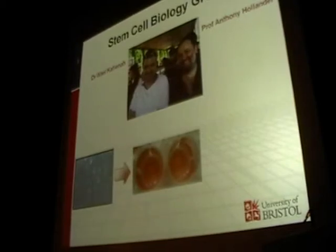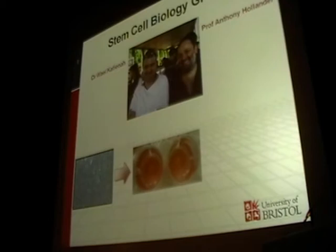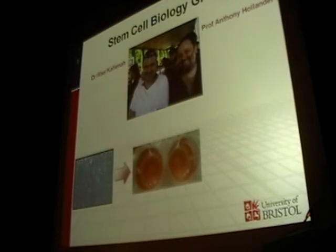I'm going to talk very briefly about the main areas of interest within our stem cell biology group at the University of Bristol. I work together with Professor Anthony Hollander and Dr. Wael Kofina, and our main areas of interest are to use stem cells, either embryonic stem cells or adult bone marrow mesenchymal stem cells, to generate new cartilage using a tissue engineering approach.